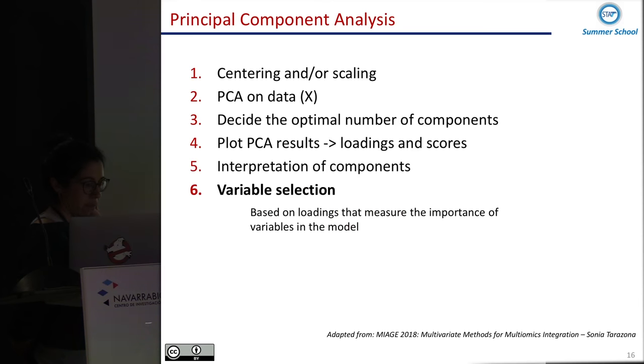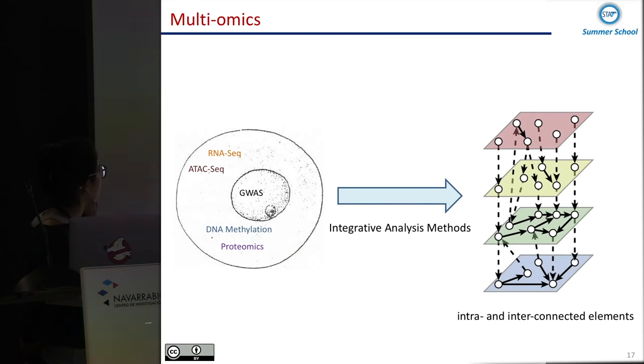And finally regarding the variable selection, basically we can take a look on the loadings and see which are the variables more important in the model. So this is just to give a brief idea, but now, okay, we have multiple omics, what we can do with the OmicsPCA.